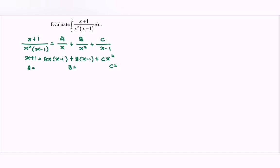In order to find A, refer to B and C — is there any common terms? The answer is no, so we skip A and find B first. Referring to A and C, notice that we have common terms where we have x and also x squared. So in order to make A and C disappear, we substitute x = 0. Then we will have only B.